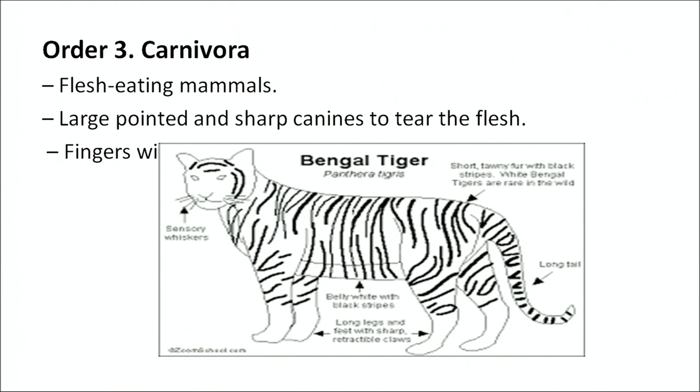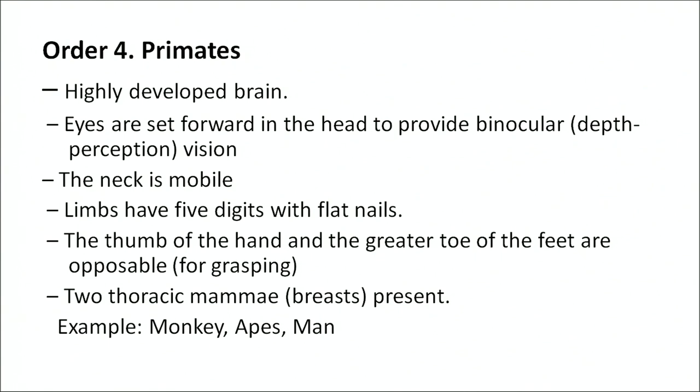Order Carnivora: flesh-eating mammals. They have large, pointed, and sharp canines to tear flesh. Fingers are present with sharp claws. Examples: lion, tiger, cat, dog. Order Primates: have a highly developed brain. Eyes are set forward in the head to provide binocular (depth perception) vision. The neck is mobile. Limbs have five digits with flat nails. The thumb of the hand and the great toe of the feet are opposable, helping them grasp things. Two thoracic mammae (breasts) are present. Examples: monkeys, apes, and humans.